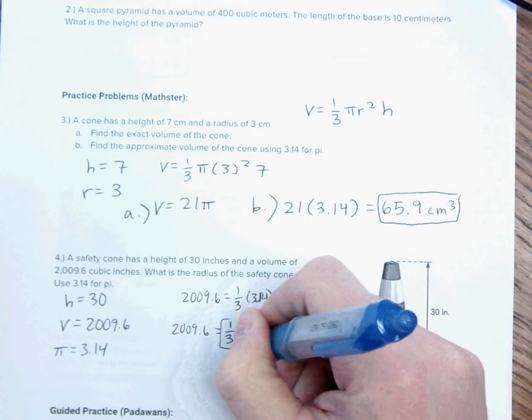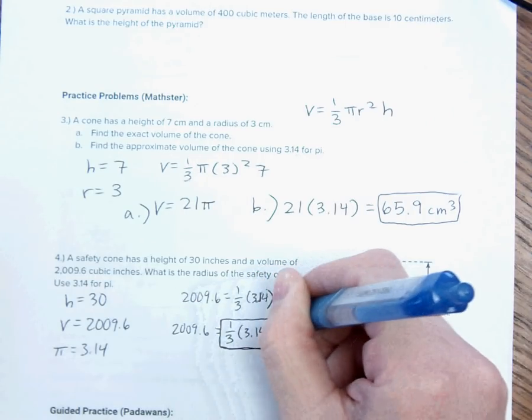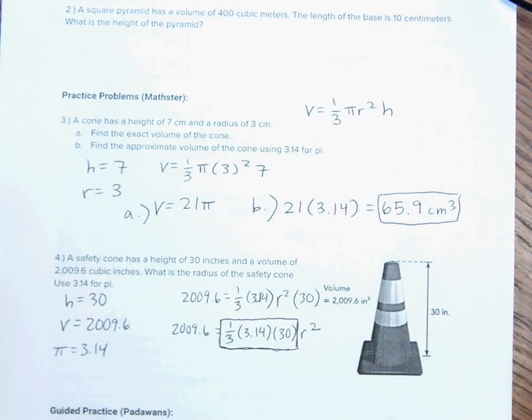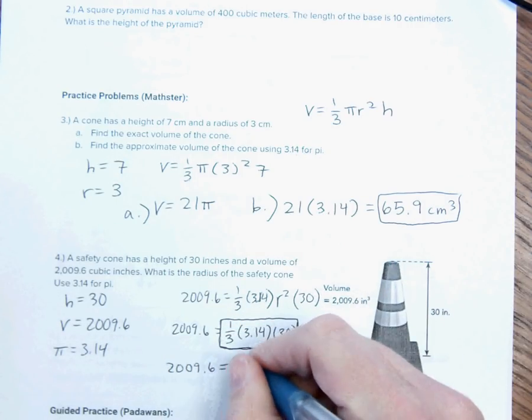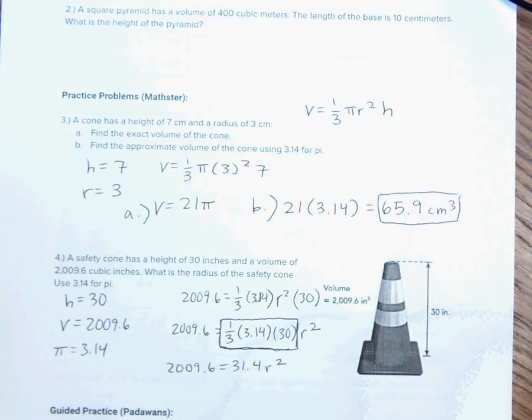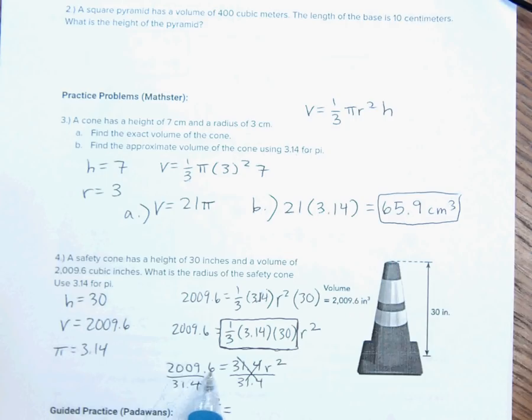So, this is just an equation, but before I can do anything, I probably want to figure out what this is right here as a number. So, let's figure out what that number is. So, one-third of 30 is 10, so 10 times 3.14 is going to be 31.4. So, 2009.6 is equal to 31.4 times R squared.